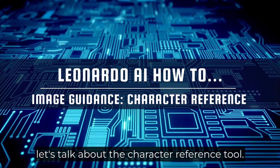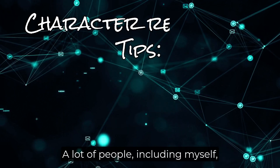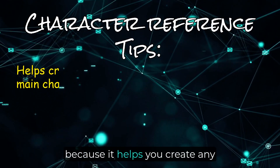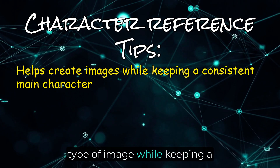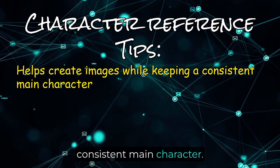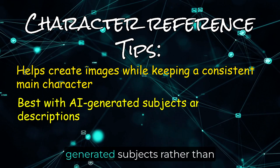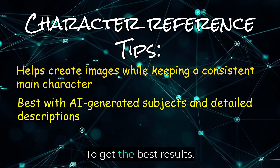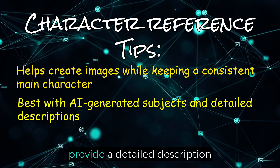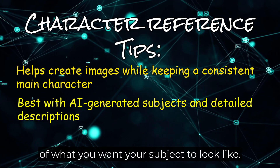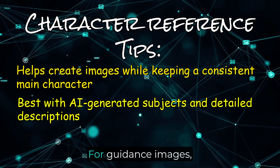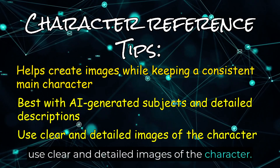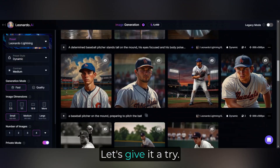And finally, let's talk about the character reference tool. A lot of people, including myself, are excited about this one because it helps you create any type of image while keeping a consistent main character. This tool does better with AI-generated subjects rather than images from external sources. To get the best results, provide a detailed description of what you want your subject to look like. For guidance images, use clear and detailed images of the character. The tool works best with AI-generated human face images looking directly at the camera.